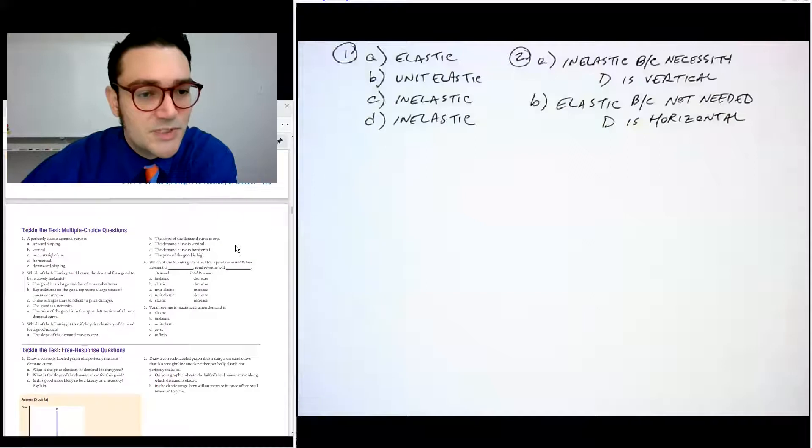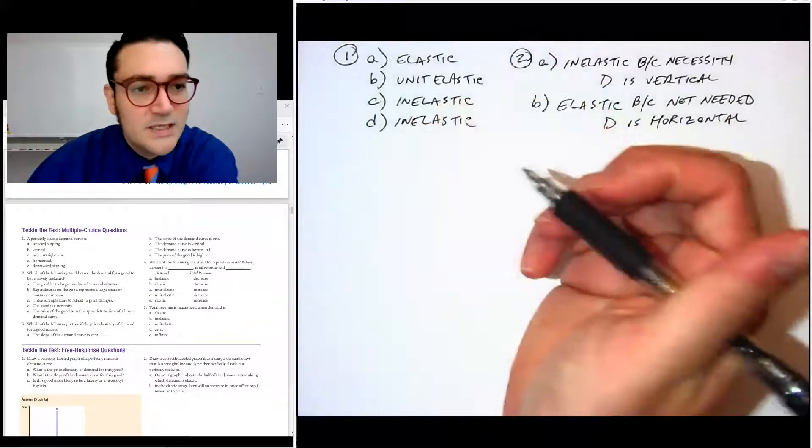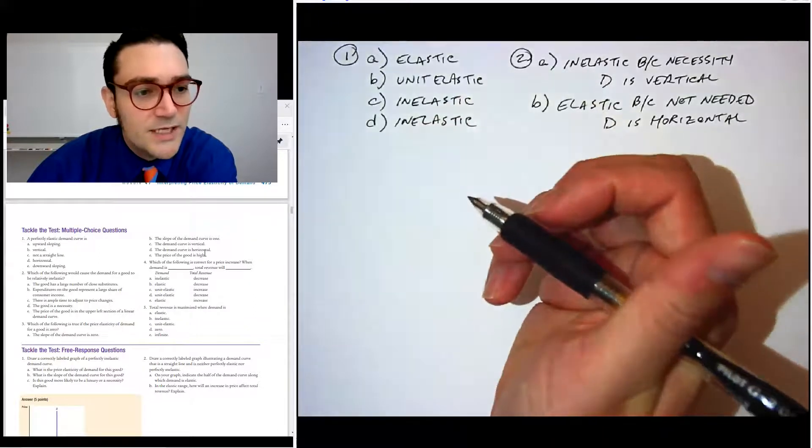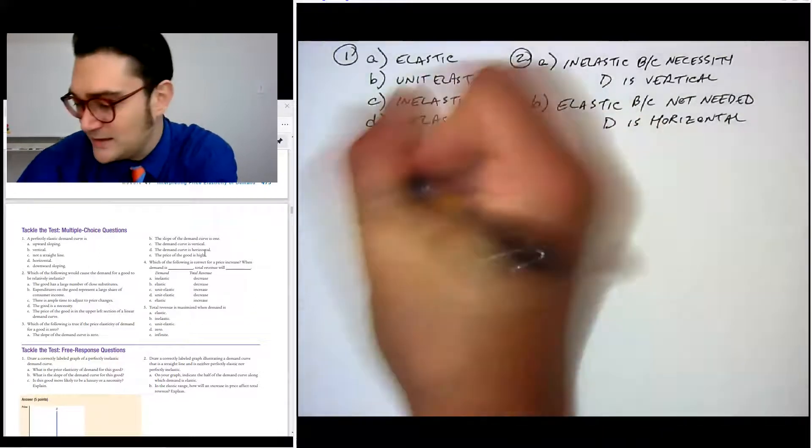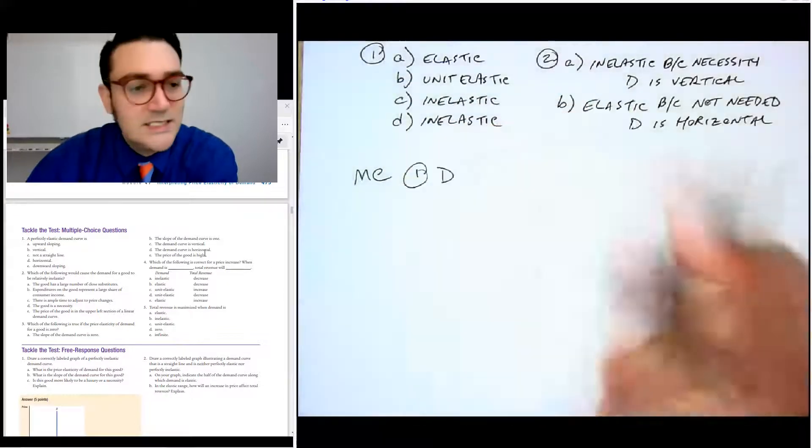Tackle the test multiple choice questions. Let's take a look. Perfectly elastic demand curve is a horizontal line. So where is that? Not upward sloping, not vertical, not a straight line, horizontal D. So multiple choice number one is D.